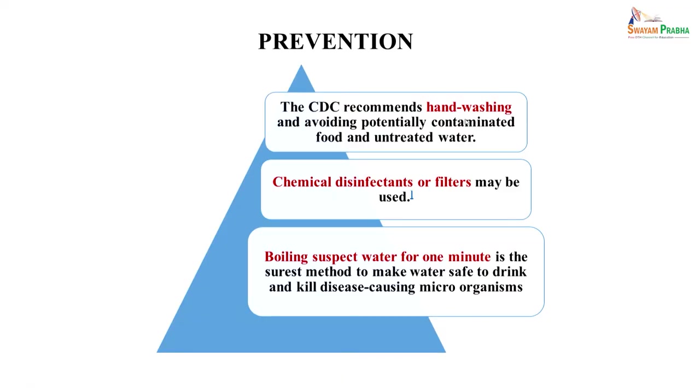For prevention, the CDC recommends hand washing and avoiding contamination of food and water. Chemical disinfectants or filters can also be used. Boiling suspect water for one minute is the surest method to make water safe to drink and kill disease-causing organisms. In summary, prevention relies on hand washing, ensuring safe water, using disinfectants, or boiling for one minute. Thank you so much.